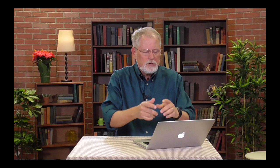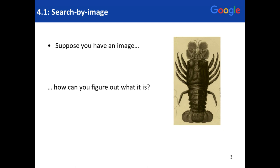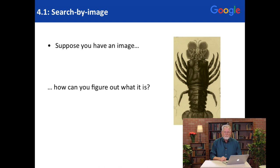So here, for example, I have this picture of a lobster. And the question is: where does this come from? What is it? Why do I have it? How would you do that? The answer is you would use search by image, and this is the way you do it.